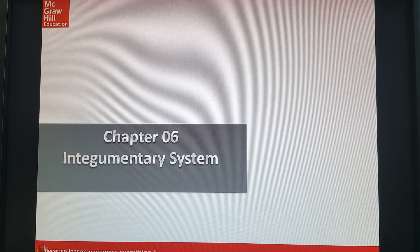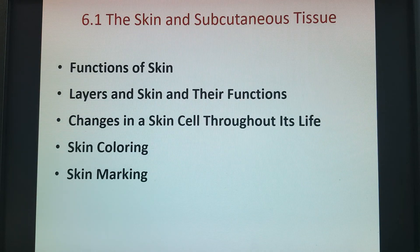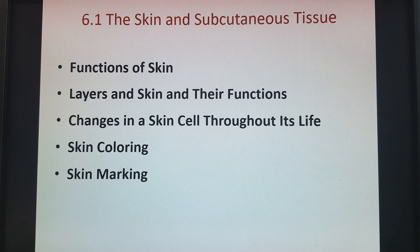Time for chapter six. This is our first organ system — the integumentary system, also known as your skin. The first section covers the functions of the skin, our different layers, and different skin colorings and markings. We'll focus just on colorings for this video because that's what's on your study guide.